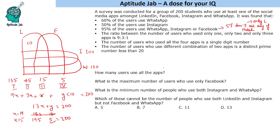Now, how many users use all the apps? The answer is 5. There is one more statement which says the number of users who use different combinations of two apps is a distinct prime number less than 20.